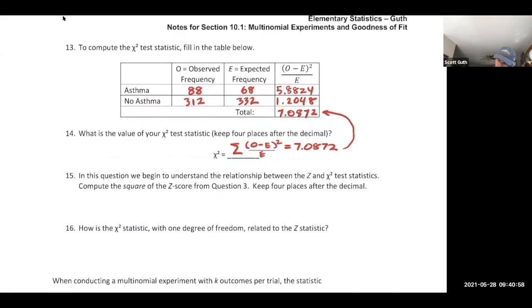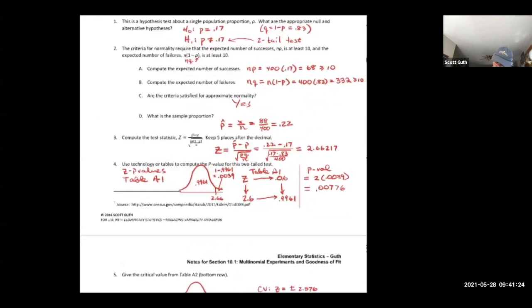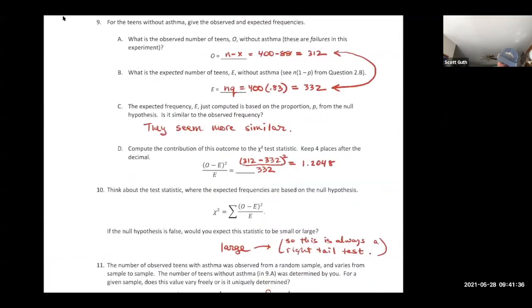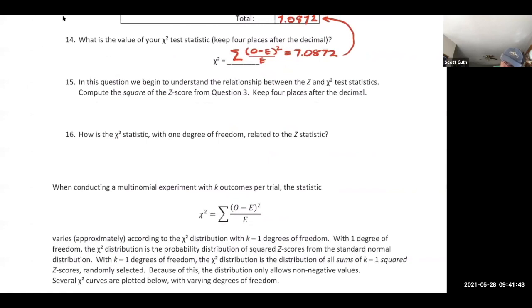Now we want to show how this chi-square statistic relates to the original Z statistic. We'll compute the square of the Z score: z was 2.66217, and z-squared = 7.0872. This matches the chi-square statistic — chi-square is a distribution of squared Z-scores. That's why it's called chi-square, not just chi.